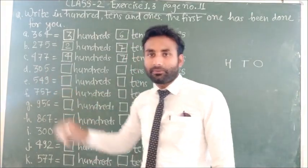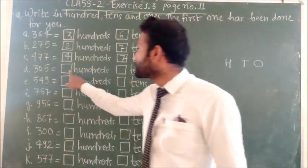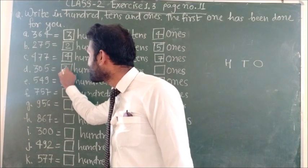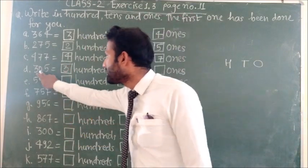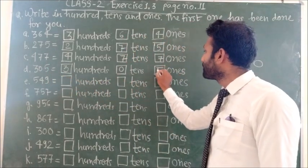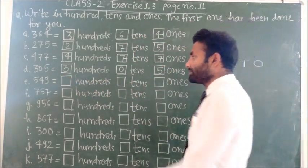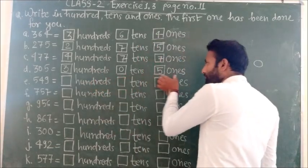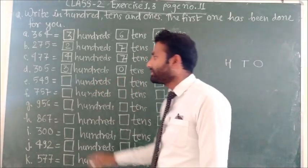Next question is 305. First box we fill with 3 hundreds, next is 0 tens, and last box is 5 ones.